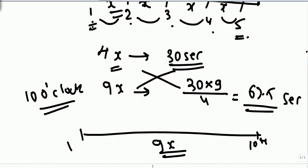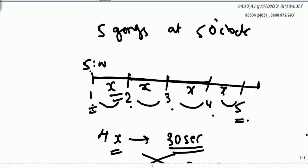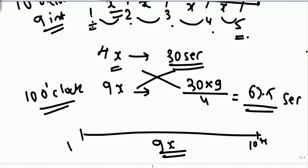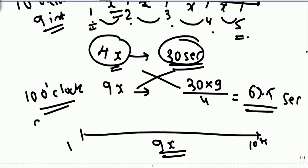Let's quickly check the concept. When a gong clock strikes 5 o'clock, there are 5 gongs — first at sharp 5 o'clock, then after every X seconds there is another gong. So at 5 o'clock: 5 gongs, 4 intervals. At 10 o'clock: 9 intervals. Between the first and last gong there are 4 gaps, taking 30 seconds. To strike 10 o'clock, 9 gaps — how much time? For example, striking 6 o'clock means 5 gaps between the 6 gongs.